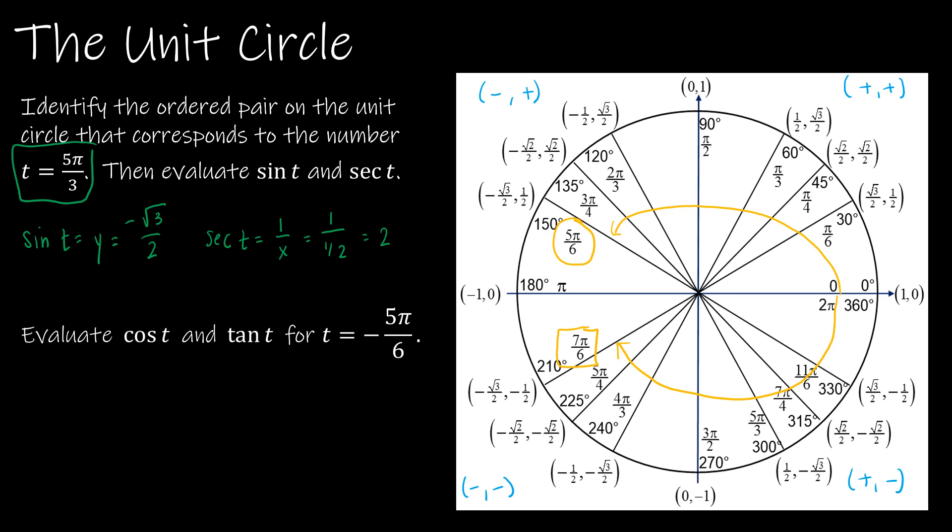So now, let's take a look at cosine of t. Remember, cosine of t was just the x value. And so my x value is -√3/2. And then tangent of t was y over x.